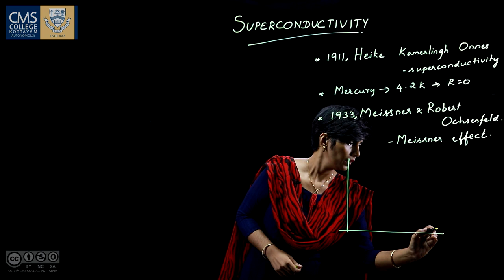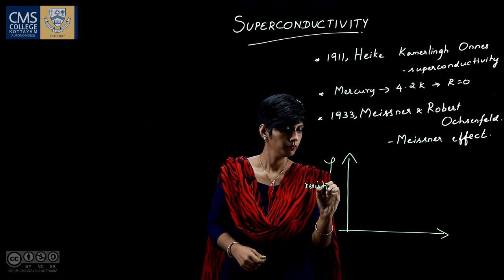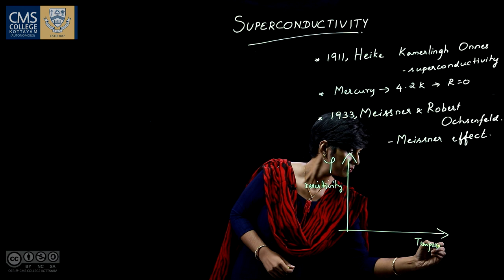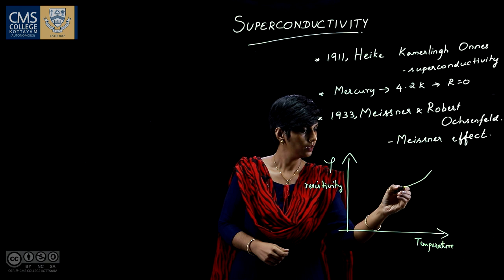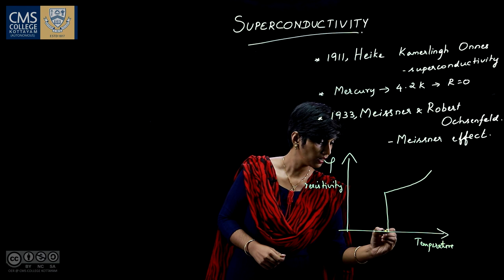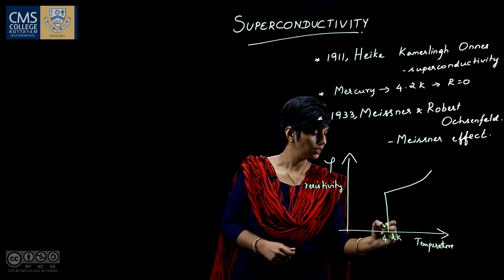The resistivity of the material decreases and it becomes zero right at 4.2 Kelvin. Mercury shows this pattern of zero resistance.